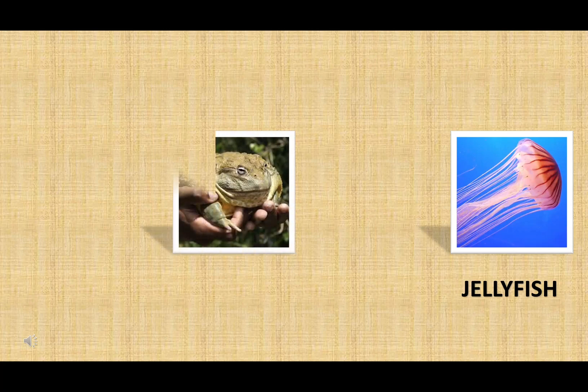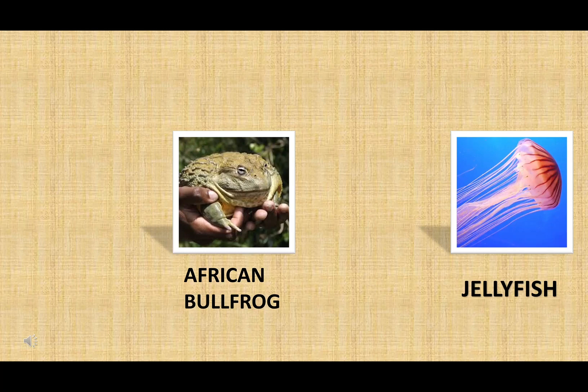Now, let me tell you something interesting about the African bullfrog, which lives in the savannah of Africa, where it gets very hot and dry. Do you know that in order to prevent its skin from drying out in the hot African climate, the African bullfrog buries itself 6 to 8 inches underground? It then creates a cocoon and stays in this cocoon for up to 7 years while it waits for rain.